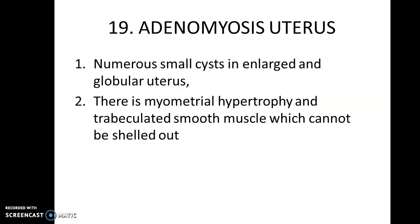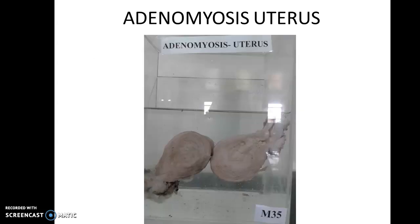There are numerous small cysts in the enlarged and globular uterus. There is myometrial hypertrophy and trabeculous smooth muscles which cannot be shed out.